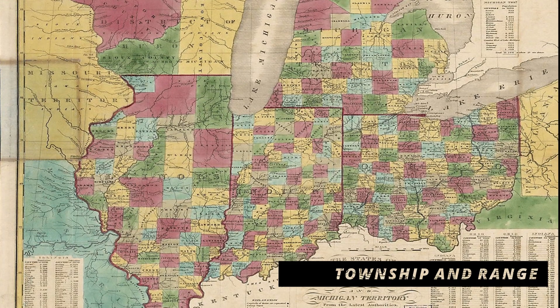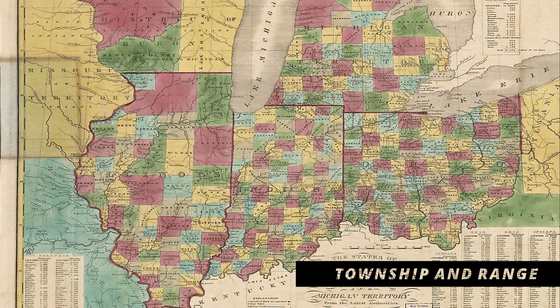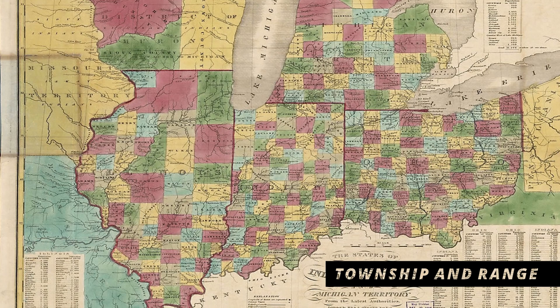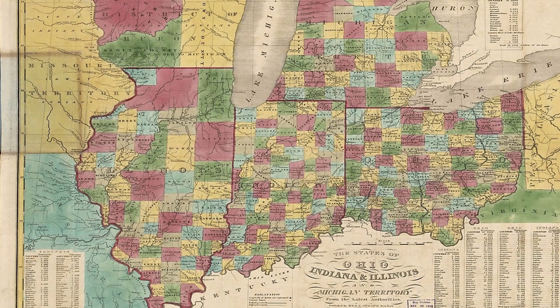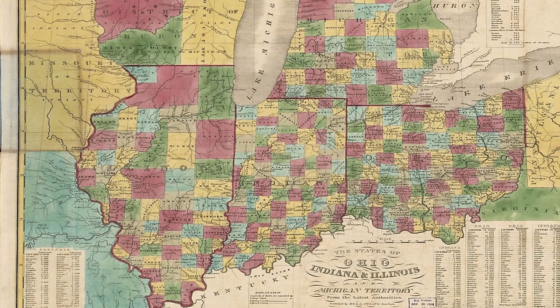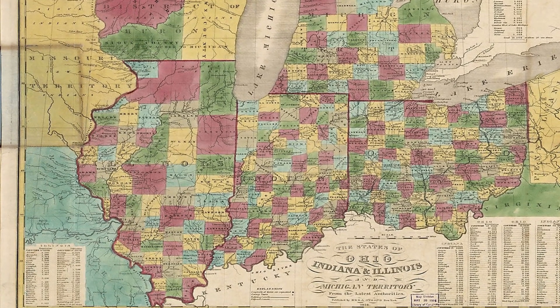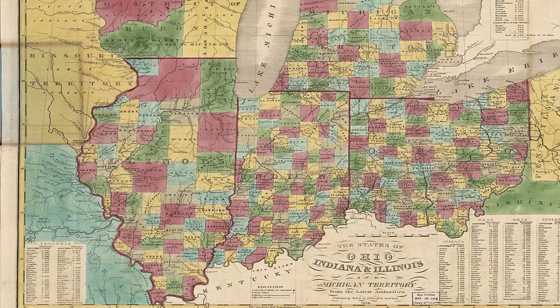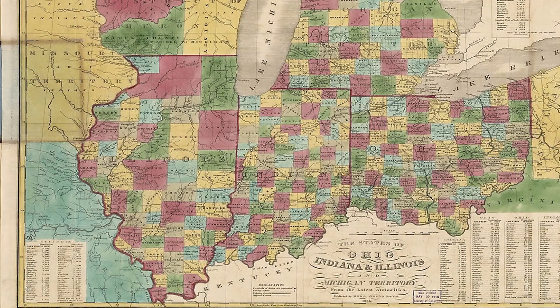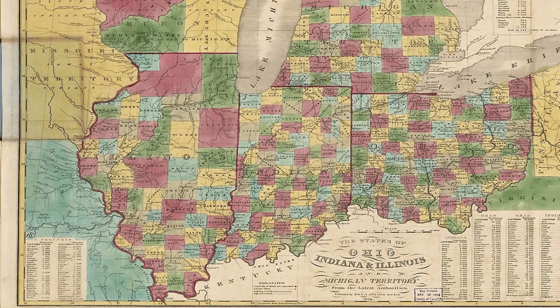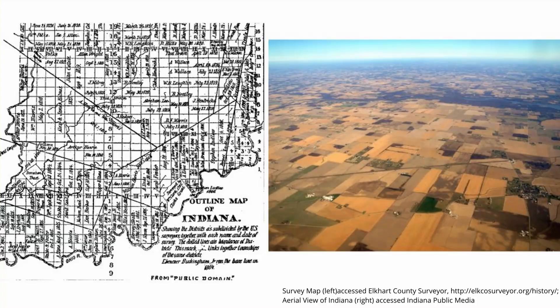The township and range was much more organized. With the Northwest Land Ordinance, they came up with a systematic method of dividing new pieces of land, and the easiest way to do so was to make them into a bunch of squares, as you can see in the Midwest right here.